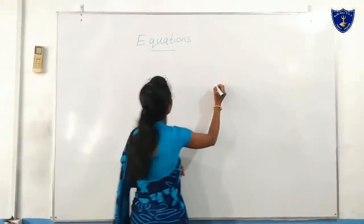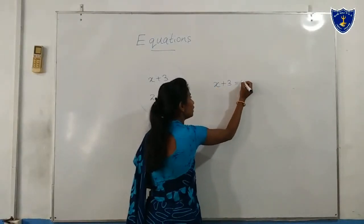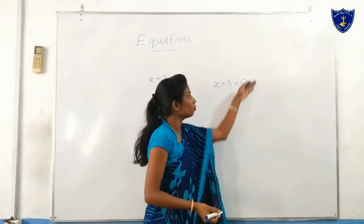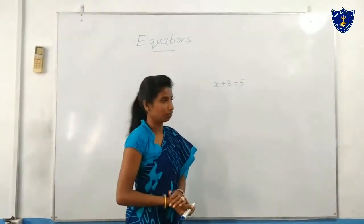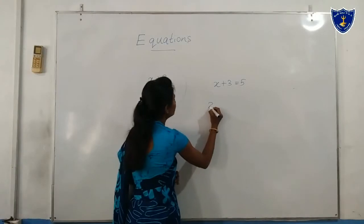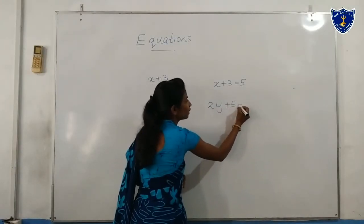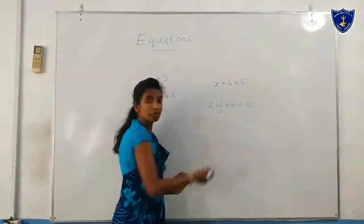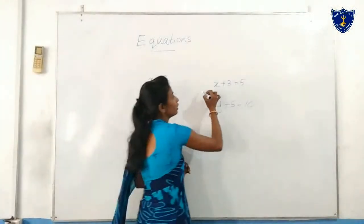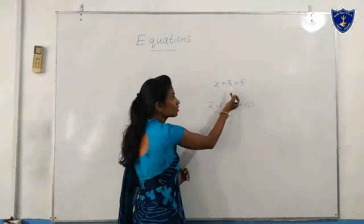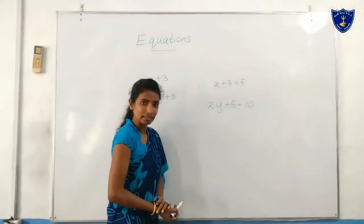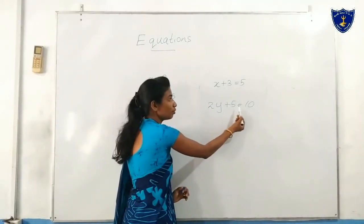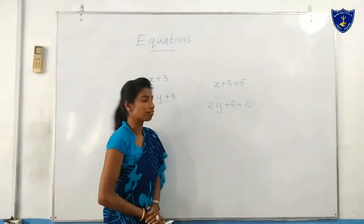Then, x plus 3 equals 5 — what happens? This one becomes an equation. If 2y plus 5 equals 10, what happens? This one also becomes an equation. So x plus 3 equals 5 is an equation, and 2y plus 5 equals 10 is also an equation.